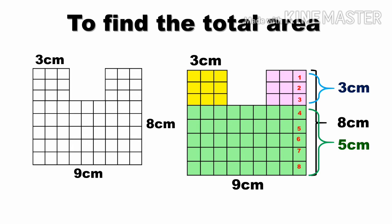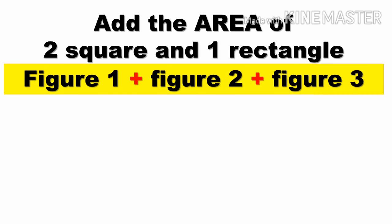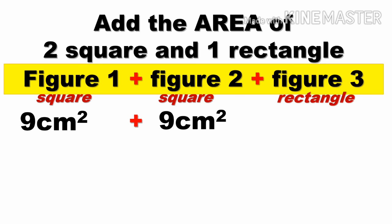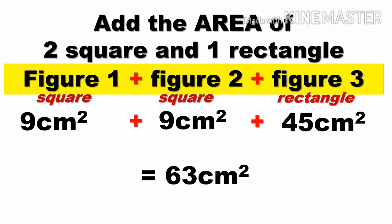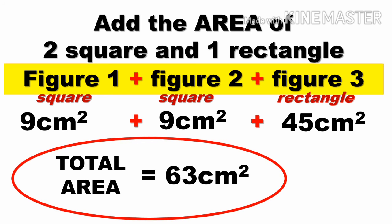To find the total area of the irregular figure, we add the areas of the two squares and one rectangle: figure one plus figure two plus figure three equals nine square centimeters plus nine square centimeters plus 45 square centimeters, which equals 63 square centimeters. That is the total area of the given irregular figure.